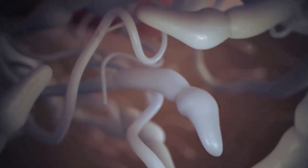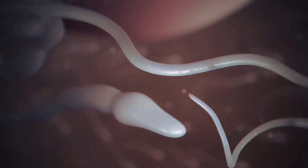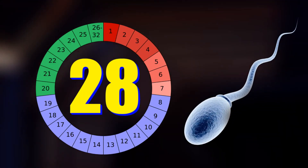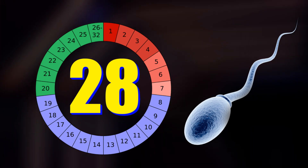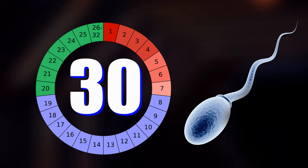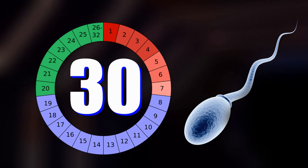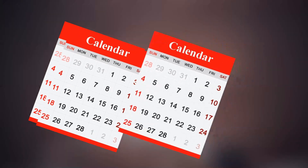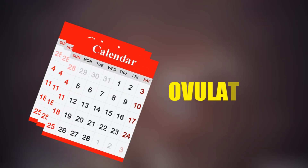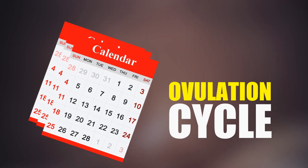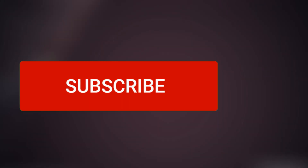Ovulation is a natural process for every woman. This cycle is counted as 28 days, but it can also be 27, 29, or 30 days. Today in this video I will discuss the ovulation cycle to identify this process.